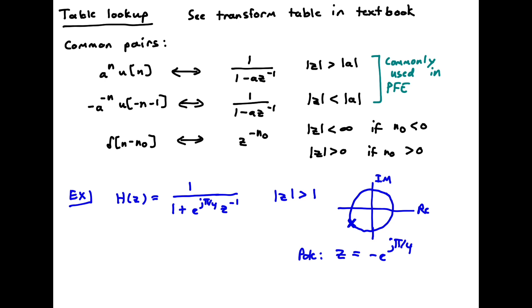So let's take a look at doing an inverse transform using this lookup. So here's the transform that we want to do. H of z is 1 over 1 plus e to the j pi over 4 z inverse. We can solve for the pole.